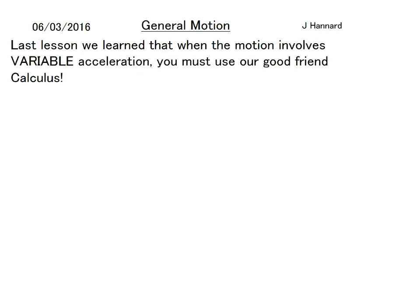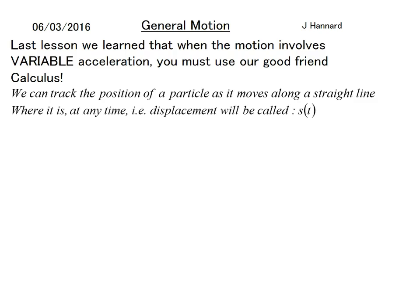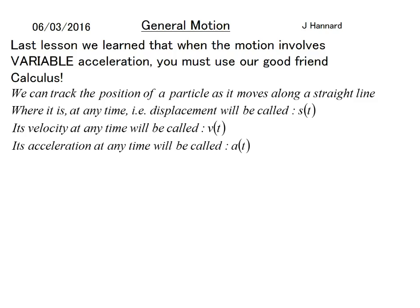Last lesson we learned that when the motion involves variable acceleration you must use our good friend Calculus. We can track the position of a particle as it moves along a straight line. Obviously we call displacement s(t), velocity v(t) and acceleration a(t).